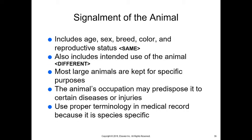Signalment of the animal is the first thing you're going to find out, and it's the important thing you first need to communicate to your doctor when stating the case. This includes age, sex, breed, color, and reproductive status — that's the same — but also the intended use of the animal. Most large animals are kept for specific purposes: could be production, companion, or as a racing animal.